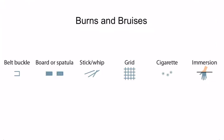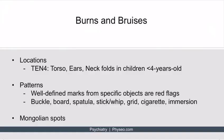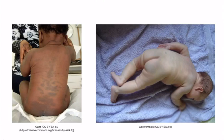Here is a visual representation of those patterns: belt buckle, board or spatula, stick or whip, grid, cigarette, and immersion — all indications of a specific violent tool used to hurt the child. There's also another possible cause of unexplained bruising called Mongolian spots. They occur in young children and are simply a patch of colored pigment that didn't make it to the top layer of skin during development. They have the coloring of a bruise, so one can easily be misled. To tell the difference, pay close attention to the patterns we discussed.